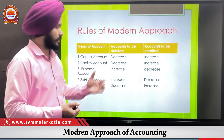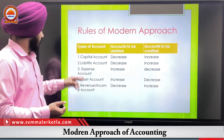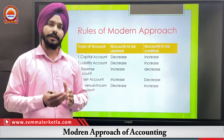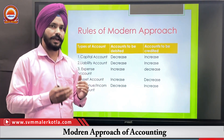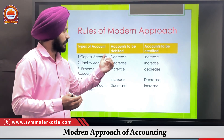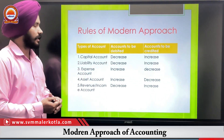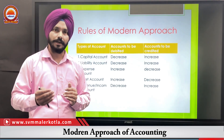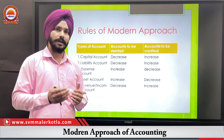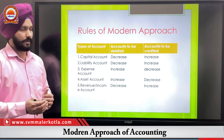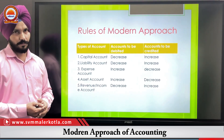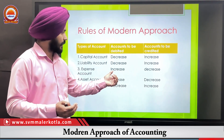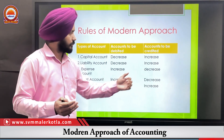Now we will explain the rules one by one. First, for Capital accounts: if capital increases, we credit it; if capital decreases, we debit it. Second, for Liability accounts: if the firm's liability increases, we credit it; if liability decreases, we debit it. For Expense accounts: if the firm's expenses increase, we debit it; if expenses decrease, we credit it.